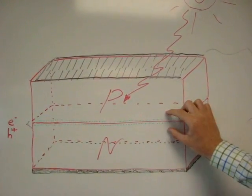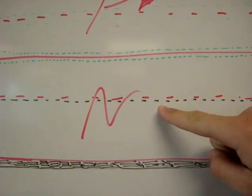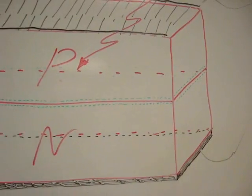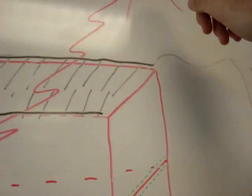Here we have two semiconductors, a semiconductor P and here a semiconductor N, that are together. Here we have a union zone where they are together and here it is the Sun.